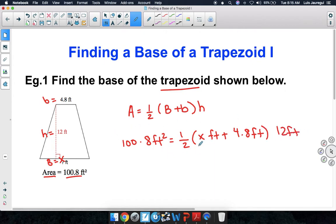Let's go ahead and simplify the right expression here. So we're going to rewrite 100.8 square feet equals 1/2 of 12 feet is equal to 6 feet. And then inside the parentheses, we're going to factor out the feet. So we're going to just leave it as x plus 4.8 times feet.